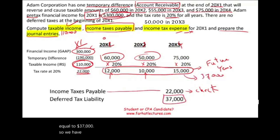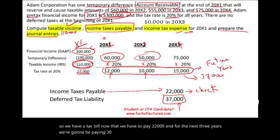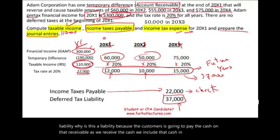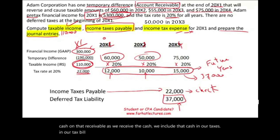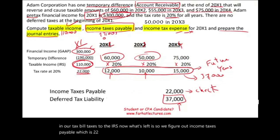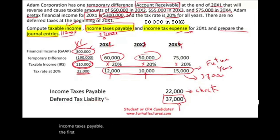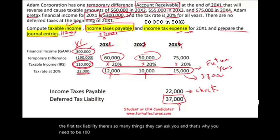So we have a current tax bill of $22,000 to pay now, and over the next three years we'll pay $37,000 in total — which we book as a deferred tax liability. If this is a multiple-choice question, you could be asked about taxable income ($110,000), income taxes payable ($22,000), or deferred tax liability ($37,000). You need to be 100% comfortable with each of these terms.